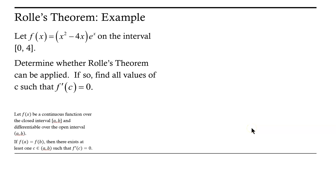Welcome. Let's take a look at an example of determining whether Rolle's theorem will apply to a function on a specified interval. In this example, we're looking at the function f(x) = (x² - 4x)eˣ on the interval from 0 to 4. What we want to do is determine whether Rolle's theorem can be applied, and if so, find all values of c such that f'(c) = 0.